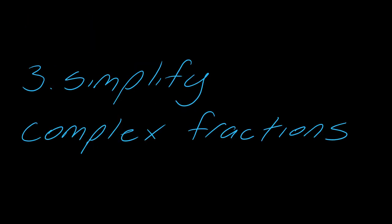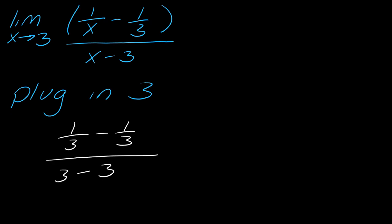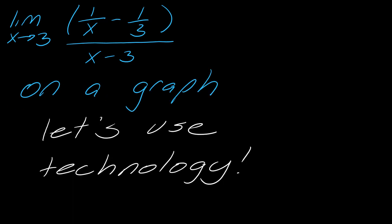The next trick is to simplify complex fractions. With this limit as x approaches 3, plugging in 3 gives 0 over 0 — not surprising. This drives home the point that 0 over 0 doesn't necessarily mean the limit doesn't exist; it just means you need to think differently.